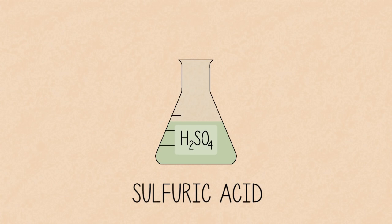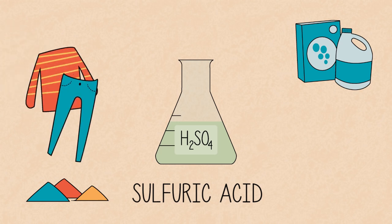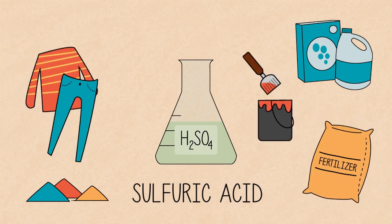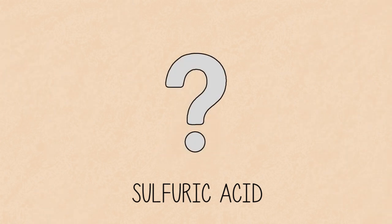Sulfuric acid is a very valuable chemical. It is used in the manufacture of detergents, dyes, fabrics, fertilizers, paints and plastics, and in many other products. But how is sulfuric acid made?